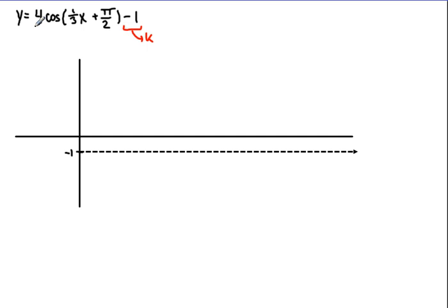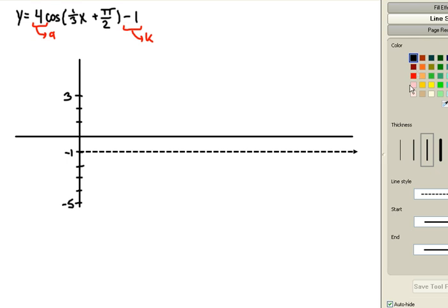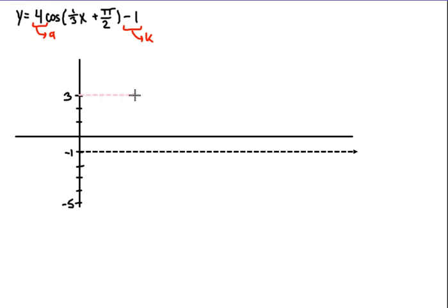From here, we can identify our amplitude, our a value, to be 4. So we can use that to help us figure out how to label our y-axis. We're going to be able to go up 4 units from our midline, up to 3 on our y-axis, and also go down 4 units, down to negative 5 on our y-axis. And then we can sketch in those min and max lines to help us set an upper bound and a lower bound to our graph, keep it a little more organized.